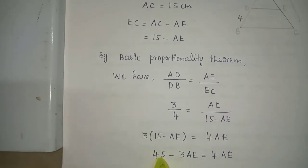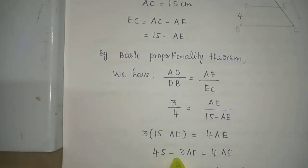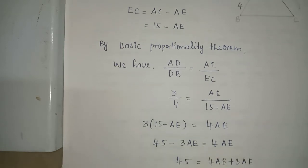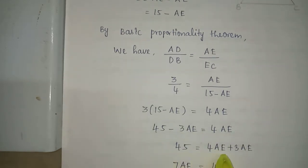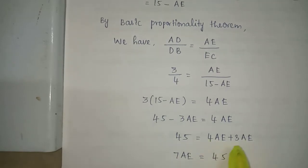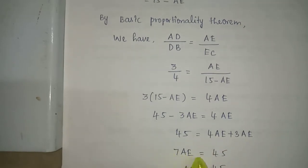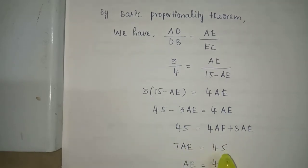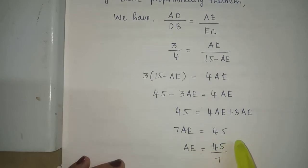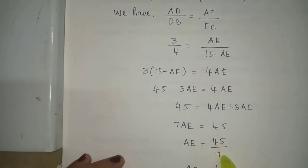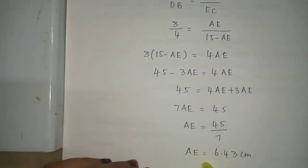So 3 into (15 minus AE) is equal to 4 AE. That gives 45 minus 3 AE is equal to 4 AE. So 45 is equal to 4 AE plus 3 AE, which is 7 AE. Therefore AE is equal to 45 by 7, which equals 6.43 cm.